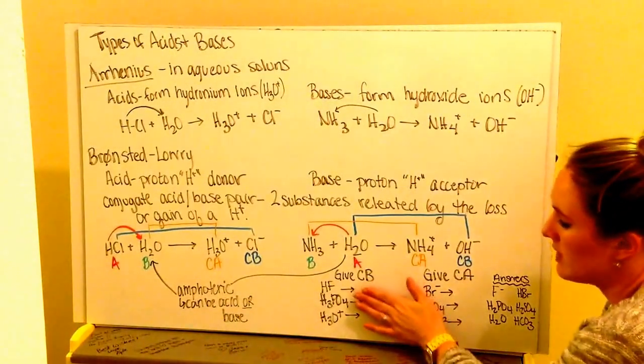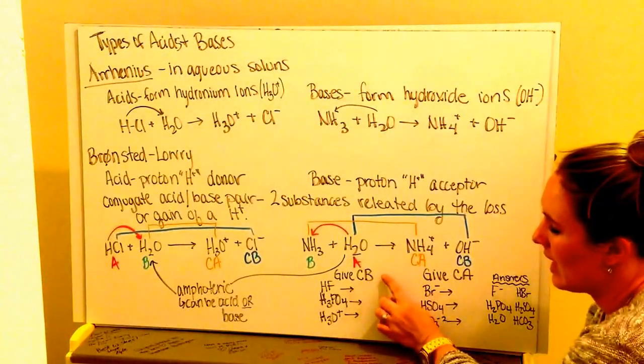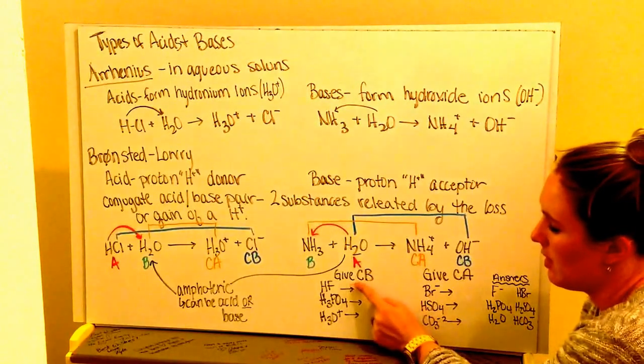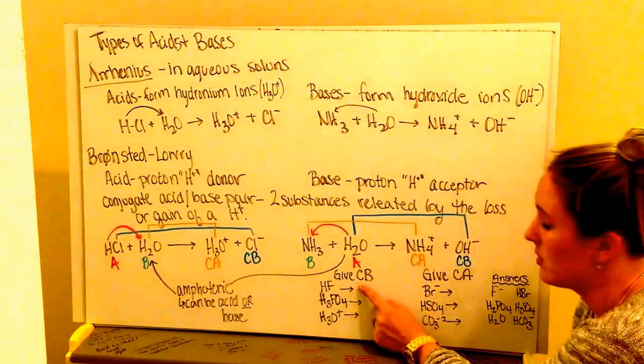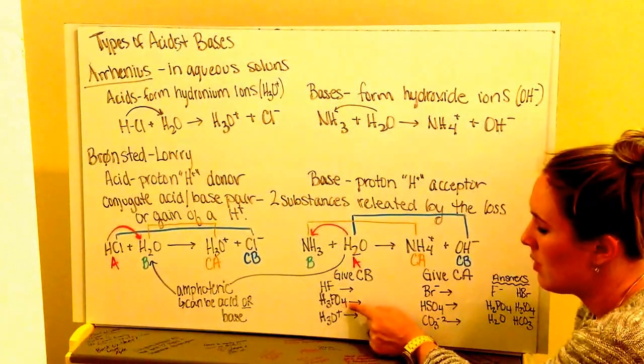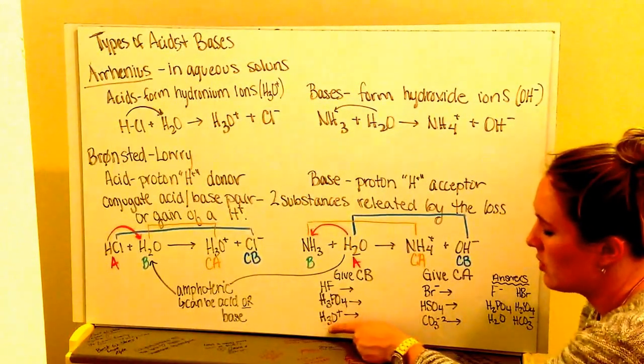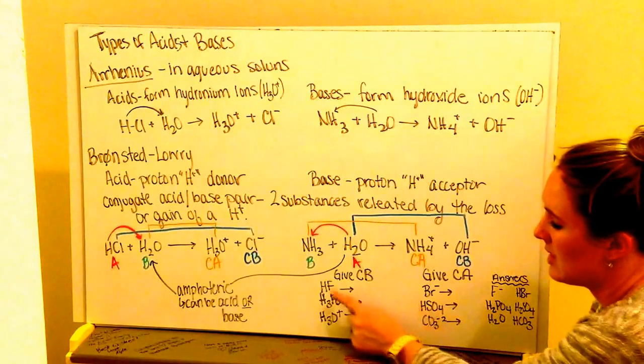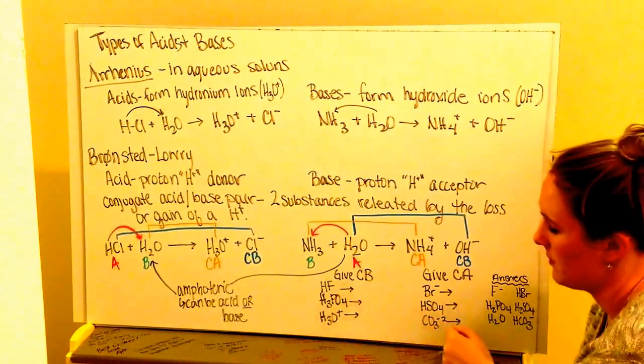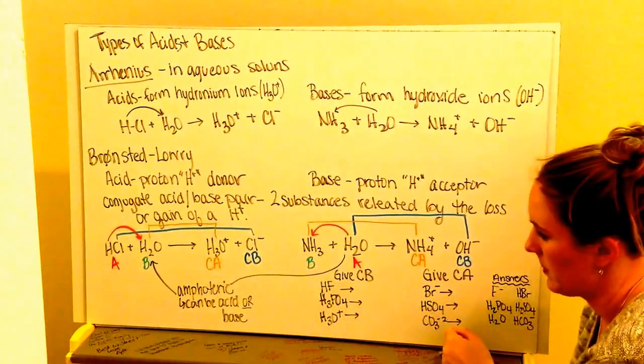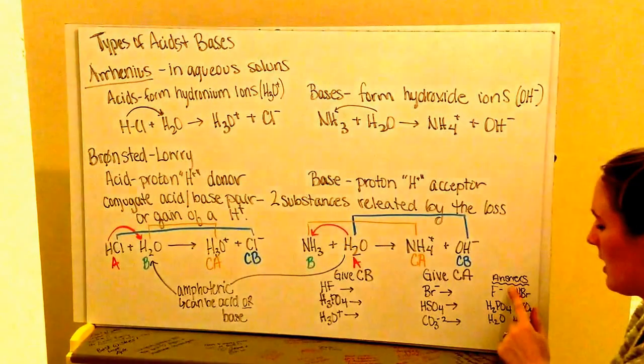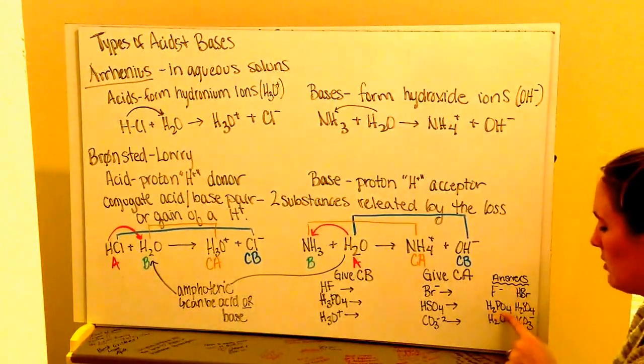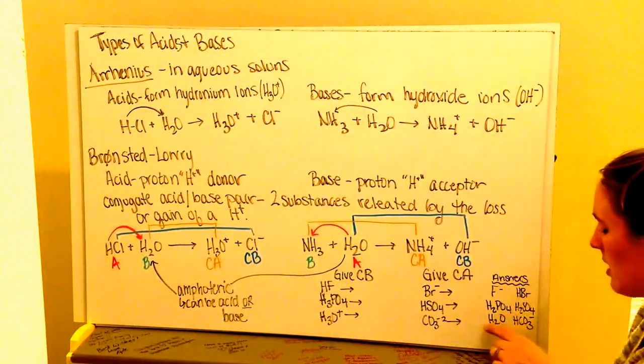Try a couple of examples here. I want you to give me the conjugate base of HF, of H3PO4, and of H3O+. I want you to say the conjugate base for each and name what you're starting with. So you should have got F-, H2PO4-, and H2O.